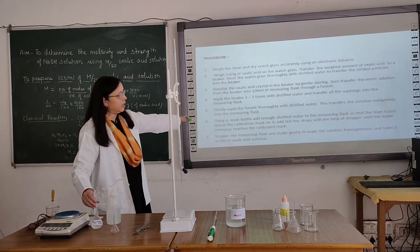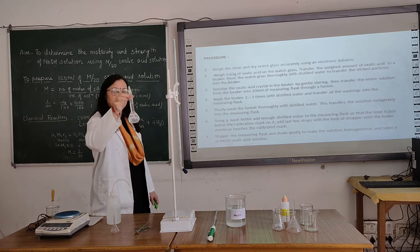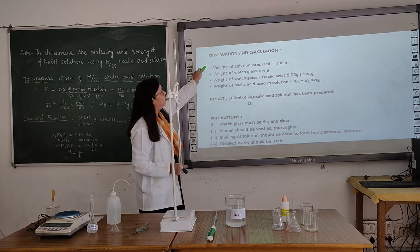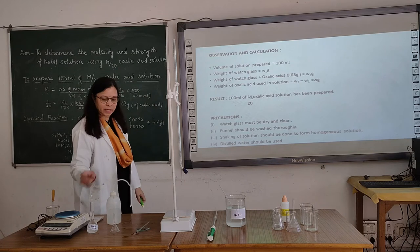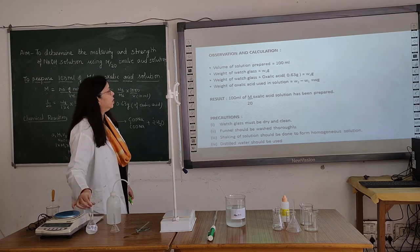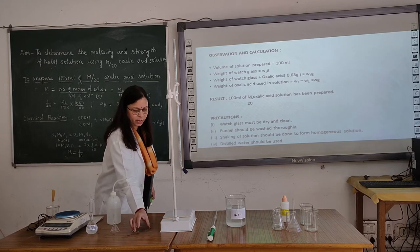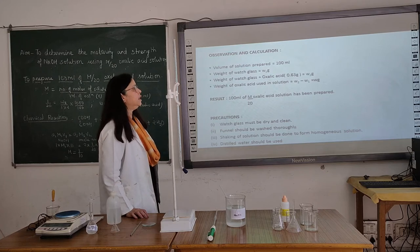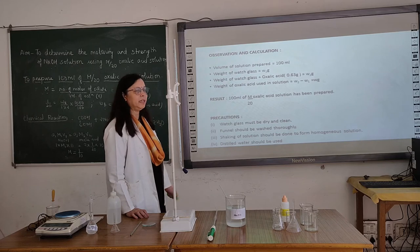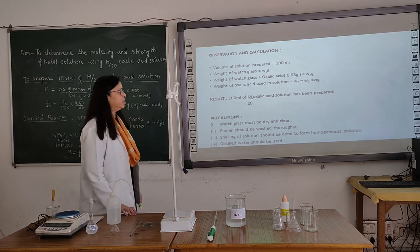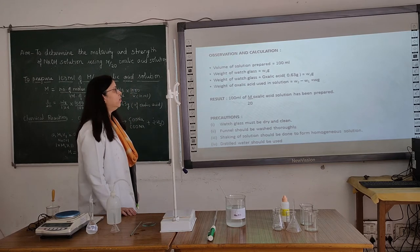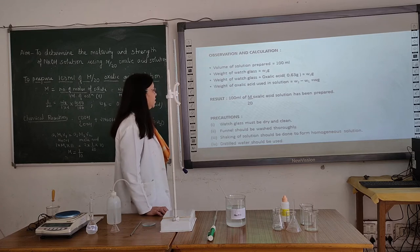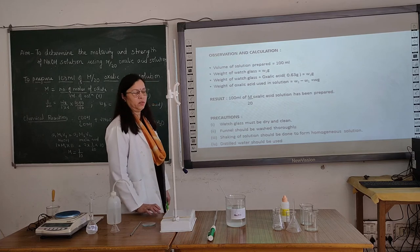This was the precision by which we have prepared this N/20 oxalic acid solution. For observations: the volume of solution prepared is 100 ml since it is a 100 ml capacity measuring flask. Weight of watch glass is W1, weight of watch glass plus oxalic acid is W2, and the weight of oxalic acid used is W2 minus W1, which equals 0.63 grams. Precautions: the watch glass must be dry and clean, funnels should be washed thoroughly, shaking of the solution should be done to form a homogeneous solution, and distilled water should be used.